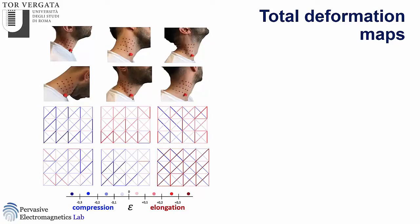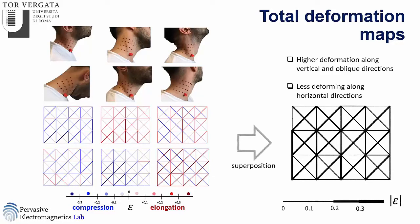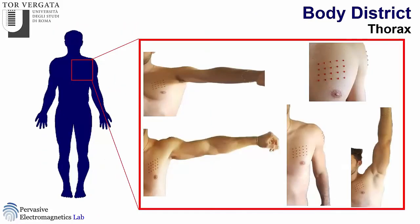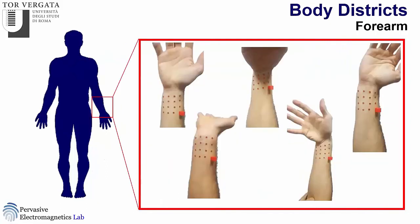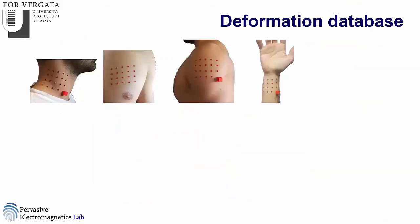We can compact the information further into a black-line representation where the thickness of the line encodes the absolute value of the strain — the thicker, the more deforming. We repeat this procedure for several body districts: the thorax, the deltoid, the forearm — typical regions where you attach sensors to get human information. In total we have 22 configurations, giving a clear picture of what happens over the skin.